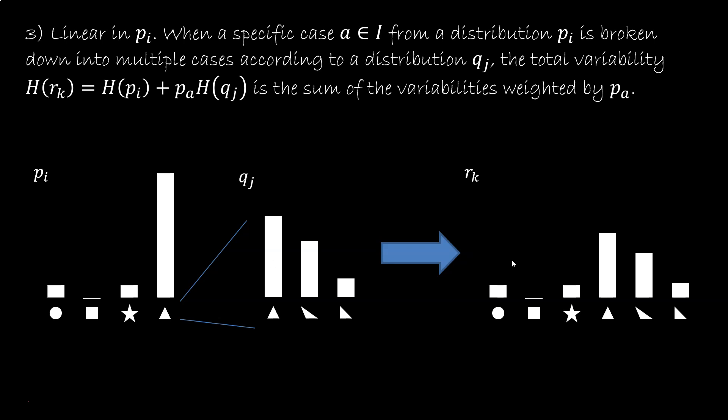We want the variability of the final distribution to be the variability of the initial distribution plus the variability of the distribution we are using to expand, weighted by the probability of the case we are expanding. Expanding means increasing the original variability by the variability of the expansion weighted by the fraction of elements we are expanding. You see, we have a linear combination where PI are the coefficients.